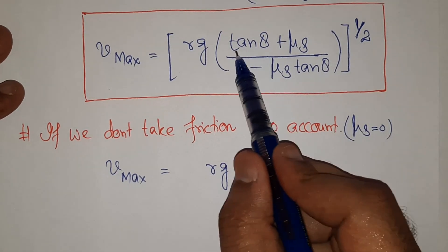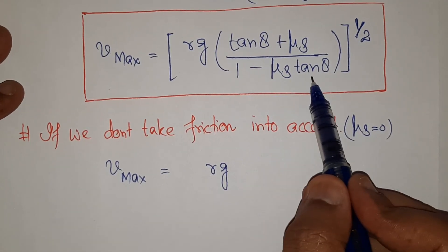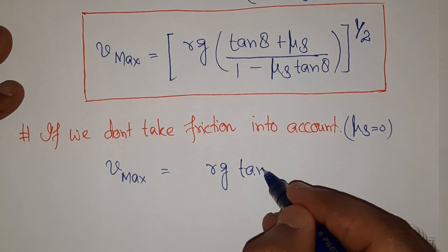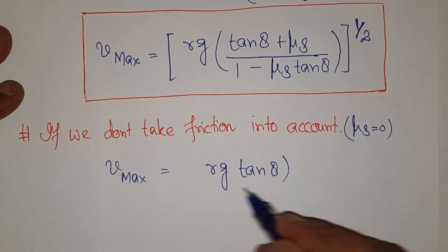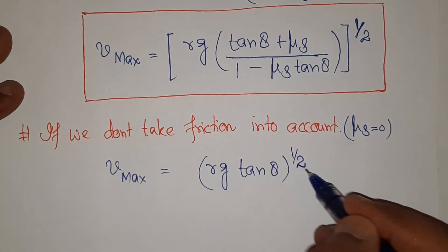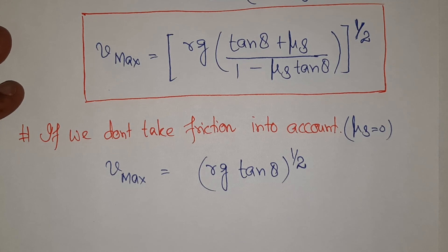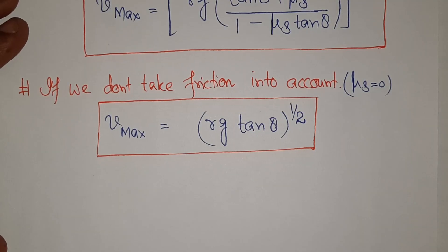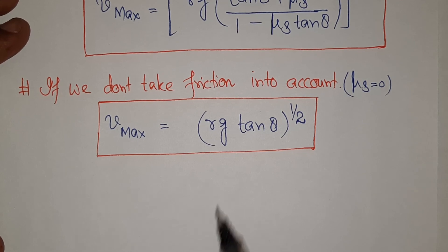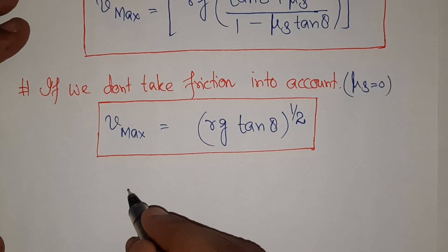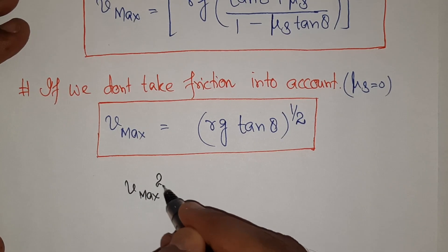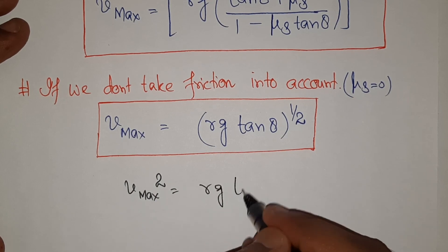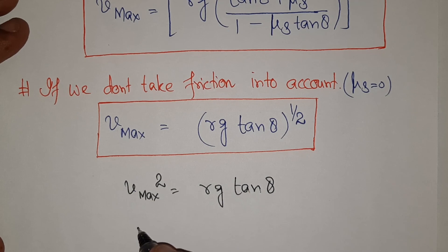With μs = 0, the tan-theta term remains and the other terms simplify to 1, giving v_max = √(rg·tanθ) raised to the power half. This is the maximum velocity due to banking alone without friction.